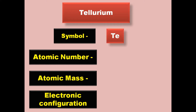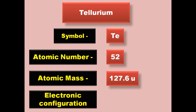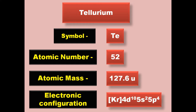Tellurium has symbol Te, atomic number 52, atomic mass 127.6, electronic configuration [Kr] 4d10 5s2 5p4. Tellurium is a metalloid and exists in solid form at room temperature.